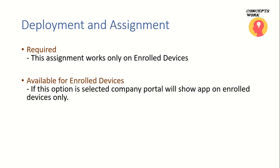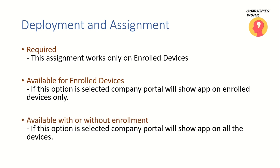The next option is Available for Enrolled Devices. When I choose this assignment type, that application will only be available if the device is enrolled in Microsoft Intune. The third and last one is Available With or Without Enrollment — meaning the application can be installed by those users on any device, whether it is compliant or not, or whether it is managed or not.